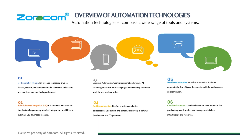Automation technologies encompass a wide range of tools and systems. Some of the areas where automation technologies have been implemented include IoT — Internet of Things — robotic process integrations to automate end-to-end business processes, cognitive automations, DevOps automation for continuous delivery and software development, and workflow automation to enable tasks and documents to be automated in a seamless and hitch-free way within an organization.